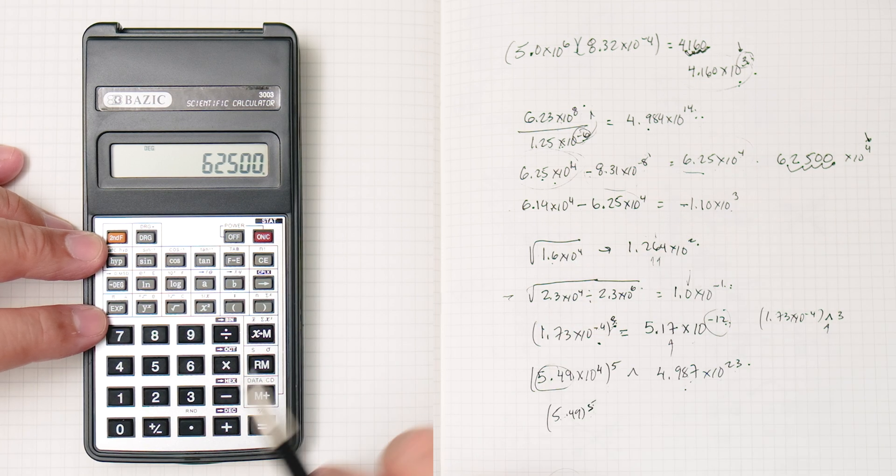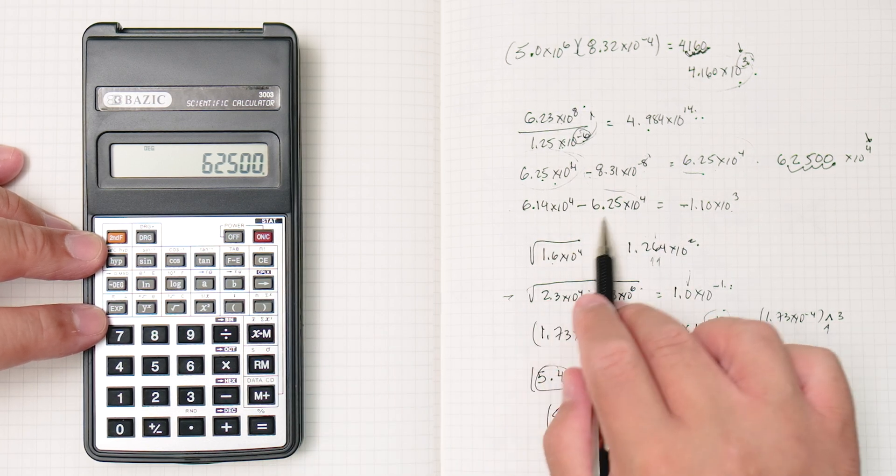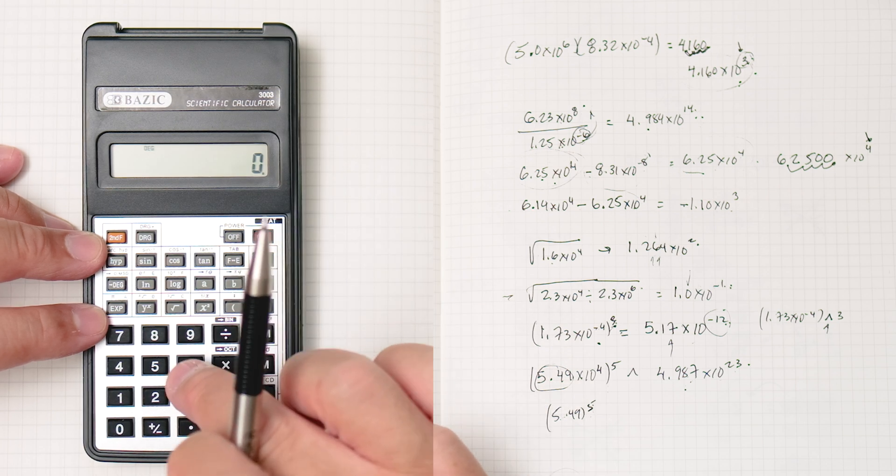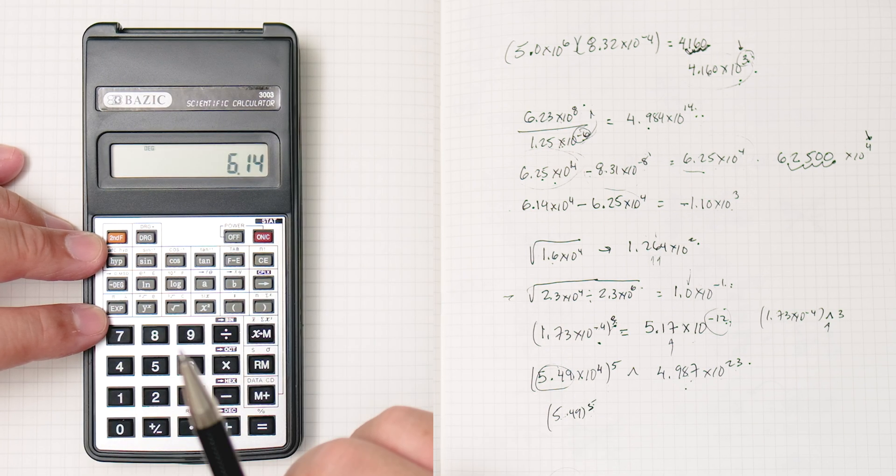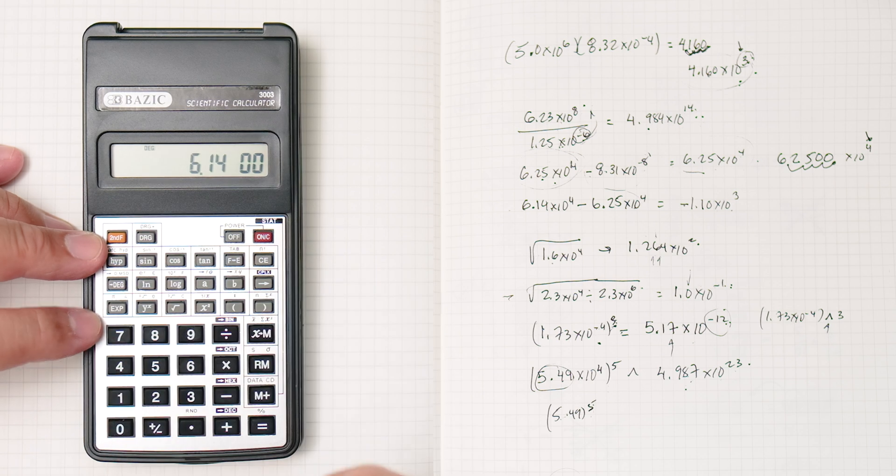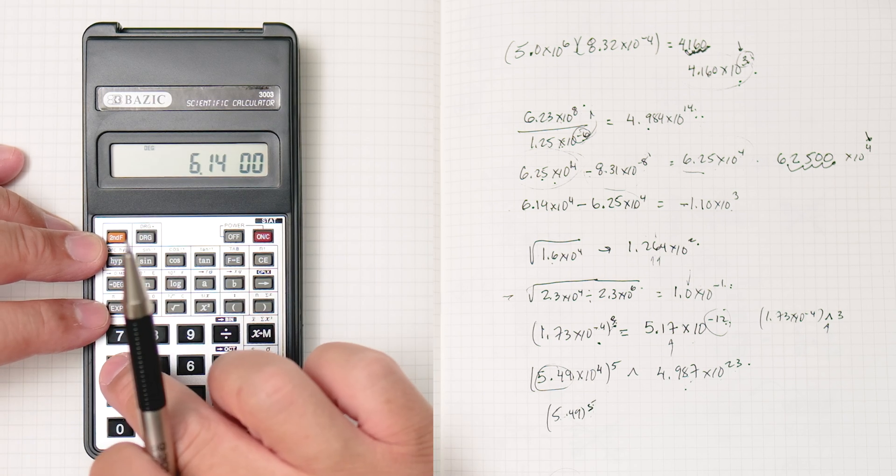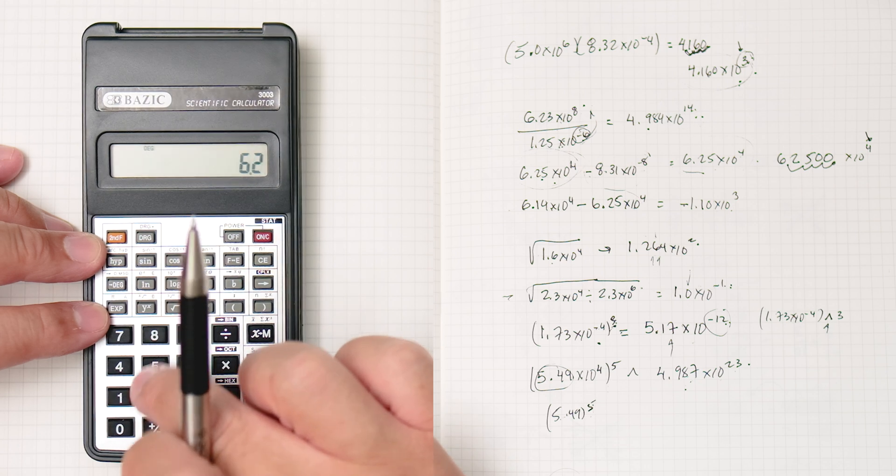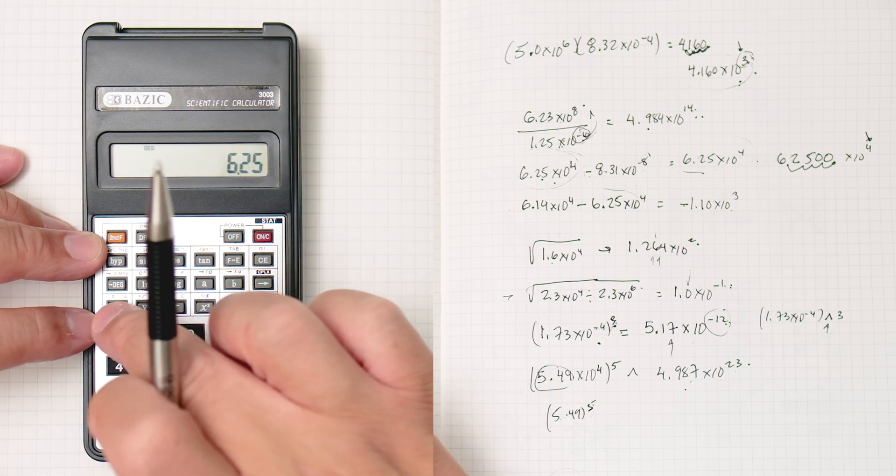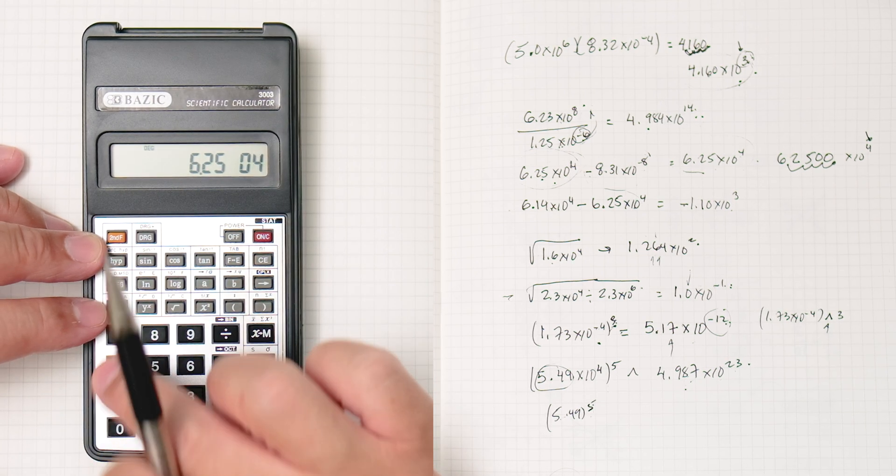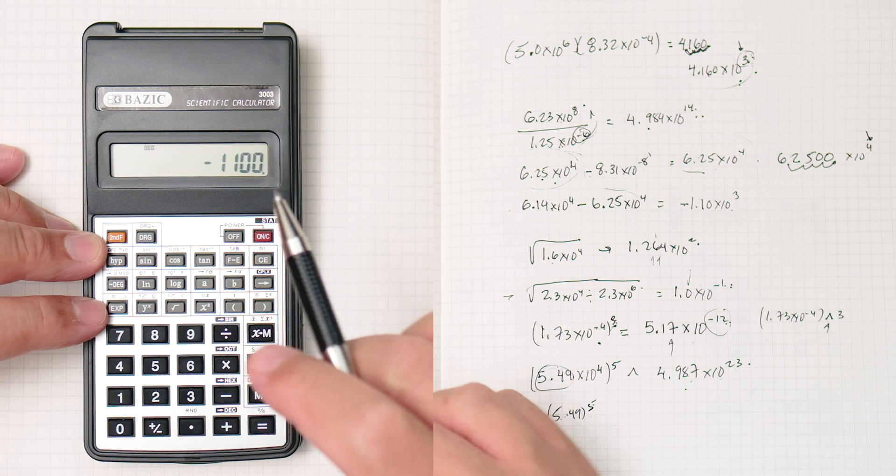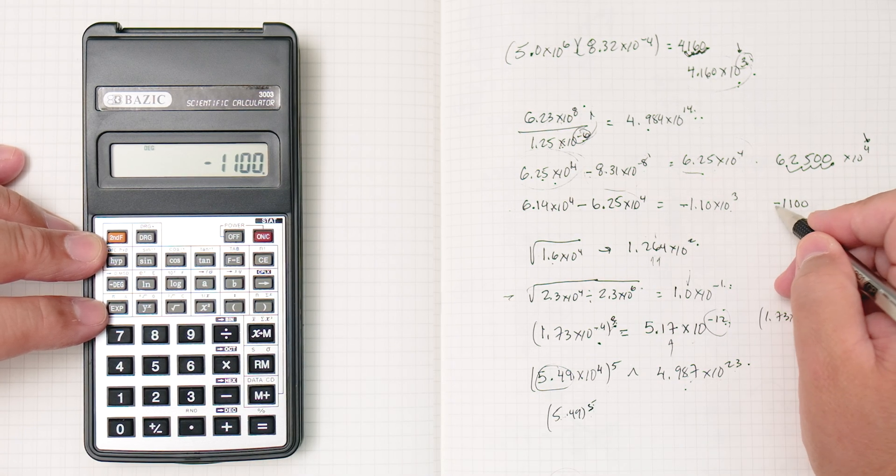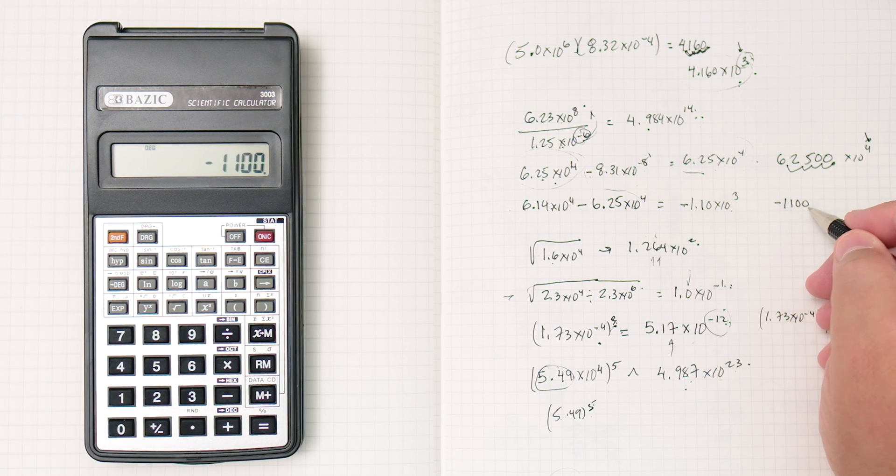This one. This one is a little more reasonable. Let's clear. Here, 6.14 times 10 to the 4th, subtract 6.25, again, times 10 to the 4th, equals. And this one gave us negative 1, 1, 0, 0, or negative 1100.